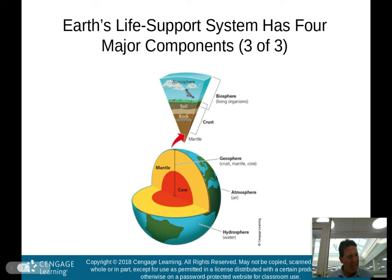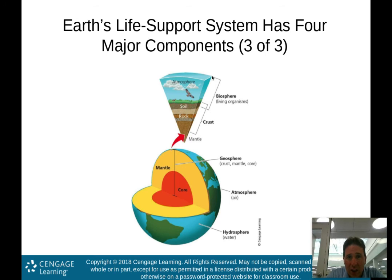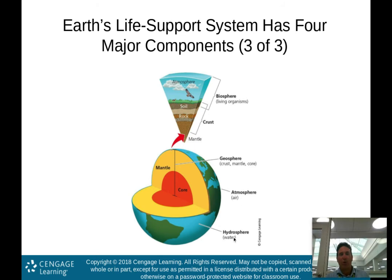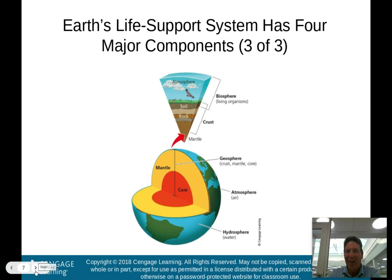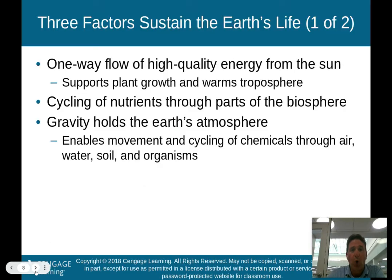This diagram puts the major components into a visual. You have the atmosphere up here, the biosphere — living organisms from the atmosphere down into the first part of the soil — then the crust, soil, and rock as the geosphere with its crust, mantle, and core. And of course the hydrosphere, the water. This graph illustrates in pictures what was just discussed in words.